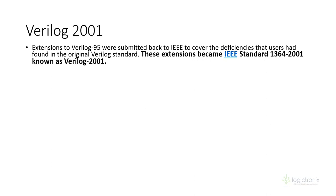Verilog has three major revisions: 1995, 2001, and 2005. Most designs utilize Verilog 2001, but in some cases people also utilize Verilog 2005. Verilog 2001 is the revision that came after the community identified deficiencies and difficulties with Verilog 95 and sent a revision request.